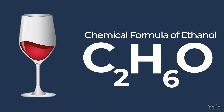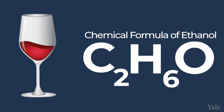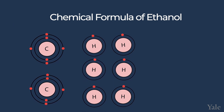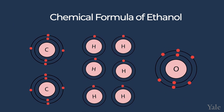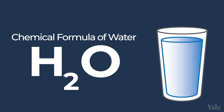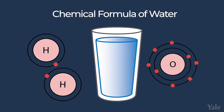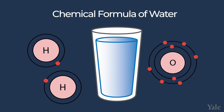Ethanol's chemical formula is C2H6O. This means that it contains two carbon atoms, six hydrogen atoms, and one oxygen atom in every molecule. Water, on the other hand, is H2O, so it contains two hydrogen atoms and one oxygen atom. Their compositions are very different.